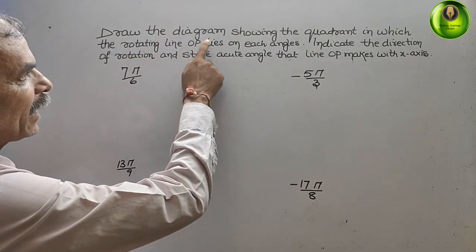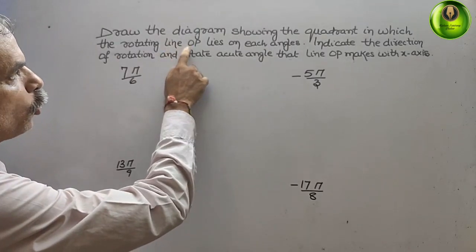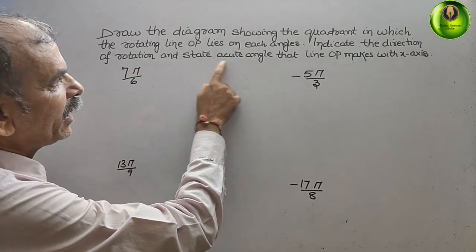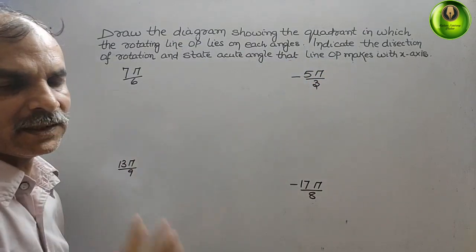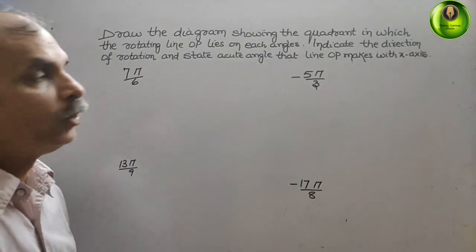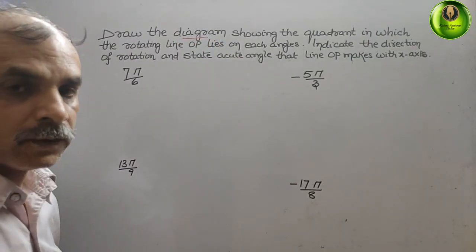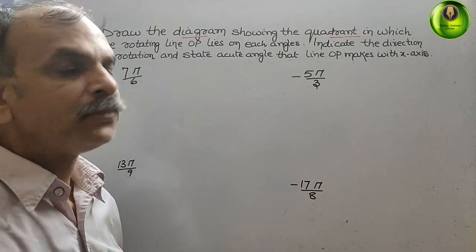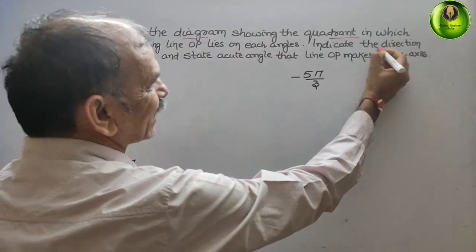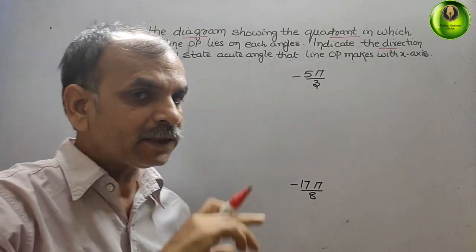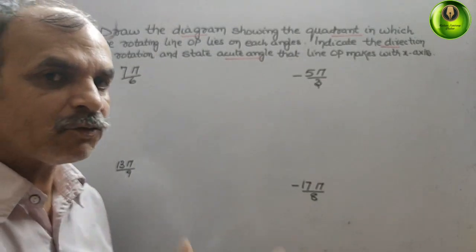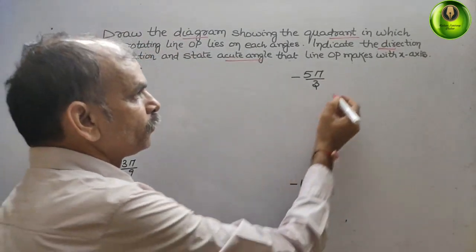The question asks us to draw the diagram showing the quadrant in which the rotating line OP lies for each angle, indicate the direction of rotation, and state the acute angle that line OP makes with the x-axis. We have to draw the diagram, tell which quadrant it lies in, indicate whether the direction is clockwise or anticlockwise, and state the base angle, which is the shortest angle from the x-axis.